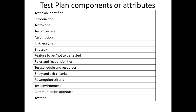The next part is the test environment. This includes what kind of software configuration and hardware configuration you require, what different versions of software you will need for testing, which defect tracking tool you are going to use, and what the different environmental stages or types of testing environments are — all these points come under the test environment.